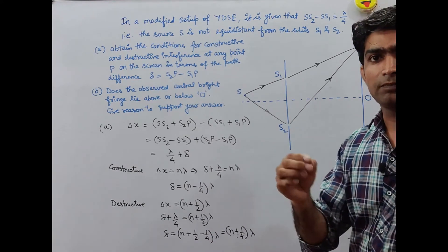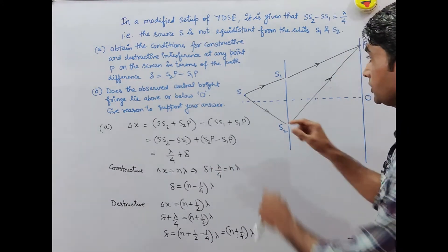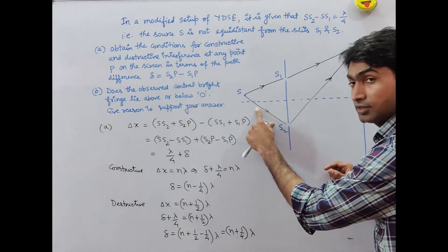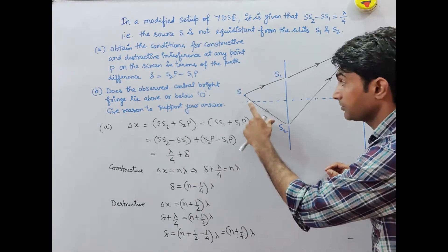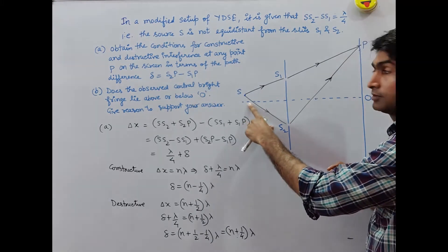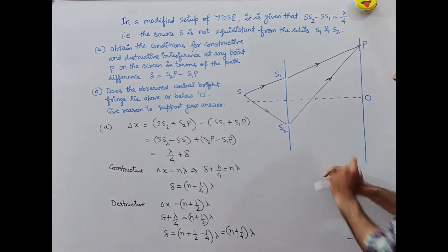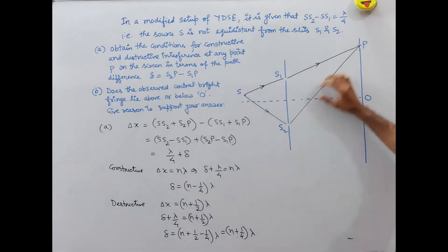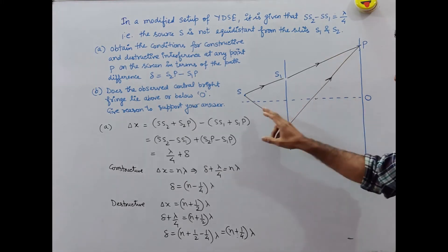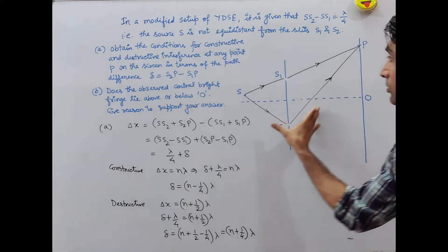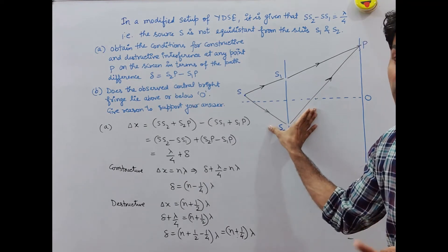Here SS2 has extra path difference, so this will be compensated. And this compensation will be more when it goes toward the lower side, when the bright fringe forms below.